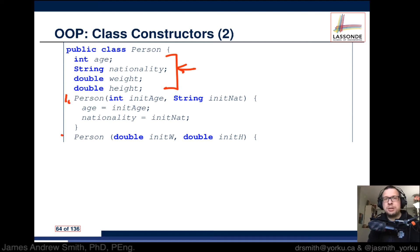There are different ways of constructing objects. The very first one we initialize the person based on an age and nationality. In the second case, we initiate things by looking at the initial weight and the initial height.